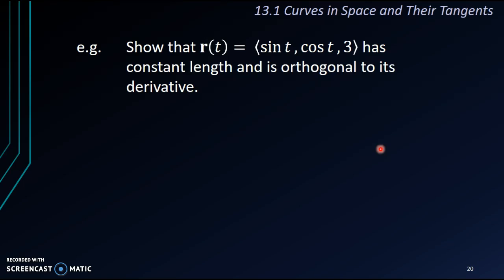For example, show that r(t), which is sin t, cos t, 3, has constant length and is orthogonal to its derivative. We'll take a look at the length. We find the length first.